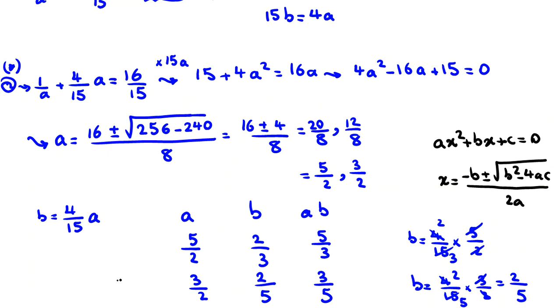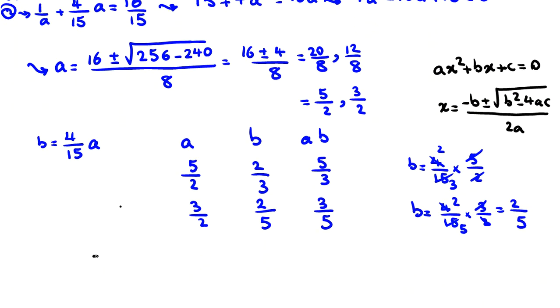The problem says product of all the possible values for ab. So here, if we multiply all the possible values for ab, one possible value is 5 over 3, one possible value is 3 over 5. So if we multiply these two things, you cancel these, cancel these, it will be 1. So the answer of this problem is 1.